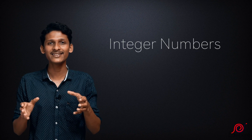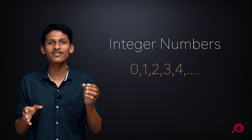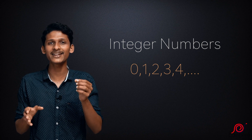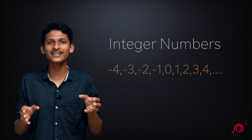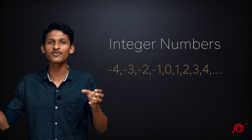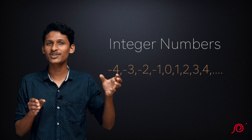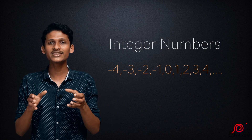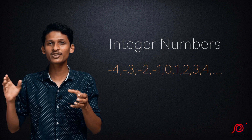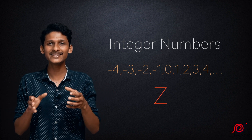Next, let's talk about integers. Integers include all natural numbers, all negative numbers, and zero. So integers are: 0, 1, 2, 3, 4, and also minus 1, minus 2, minus 3, minus 4. Integers include zero, positive natural numbers, and all negative numbers.